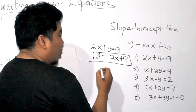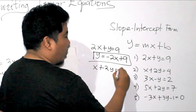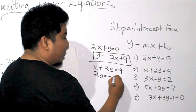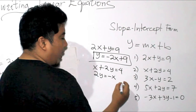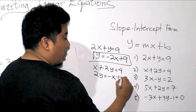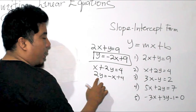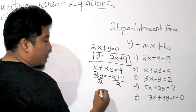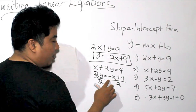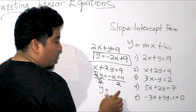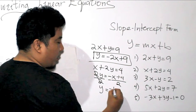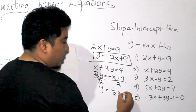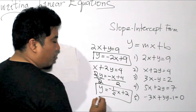For the second example, we have X plus 2Y is equal to 4. We transpose X to the other side, giving us 2Y is equal to negative X plus 4. Since Y has a coefficient of 2, we divide the whole equation by 2. This gives us Y is equal to negative one-half X plus 2. That is your final answer.